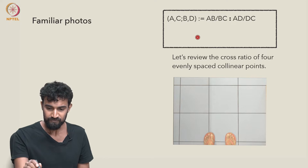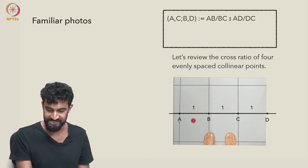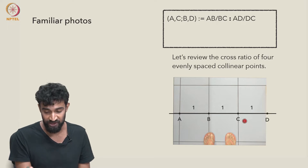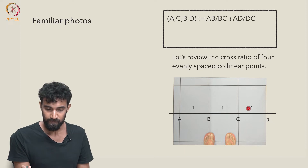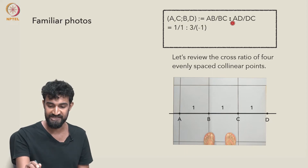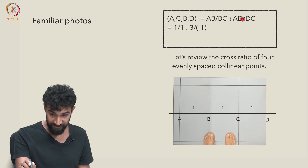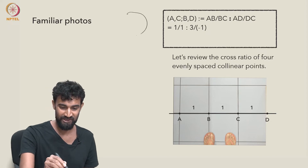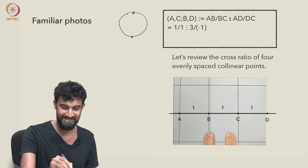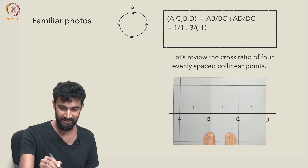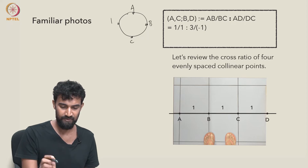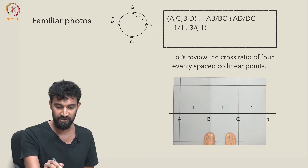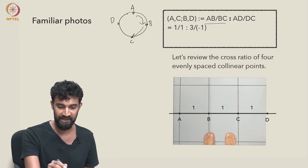Here's the cross-ratio. Let's call these points A, B, C, and D, and let the distance between successive tiles be 1 in every case. The cross-ratio is AB over BC, all divided by AD over DC. As a way of remembering it: it's AB over BC divided by AD over DC.